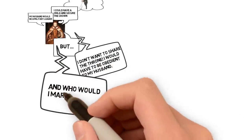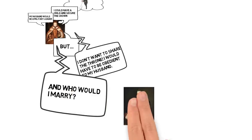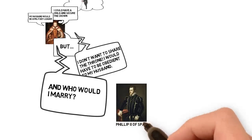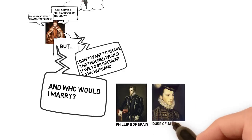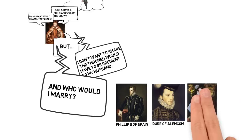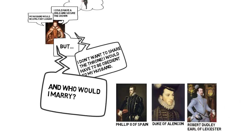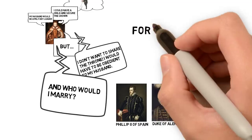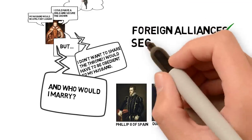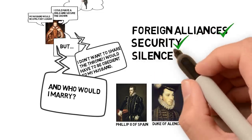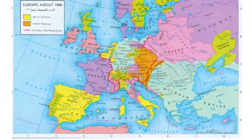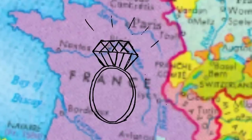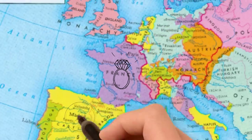If Elizabeth is going to marry, she needs to decide who. She has many suitors, including Philip of Spain, the Duke of Alençon, and Robert Dudley, Earl of Leicester. The first two bring foreign alliances and would silence her critics. Robert Dudley is a Protestant and popular, so there are advantages to marrying him as well.